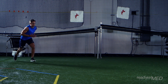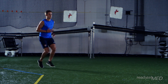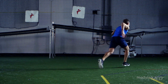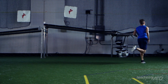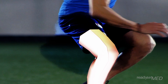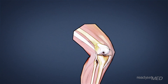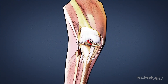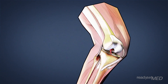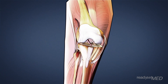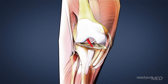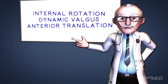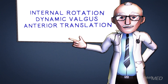When you're cutting or pivoting, you're often planting your lead foot hard on the ground, stopping abruptly, and then propelling yourself in another direction. When you plant your foot, three large forces are introduced on your ACL. These are internal rotation, dynamic valgus, and anterior translation. If your muscles are weak or your technique is poor, these same forces can cause an ACL injury.